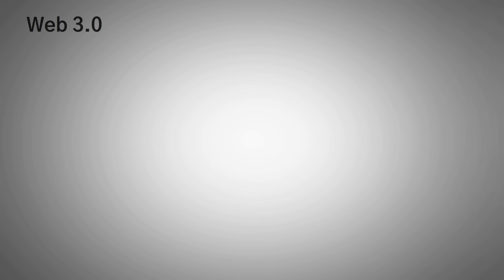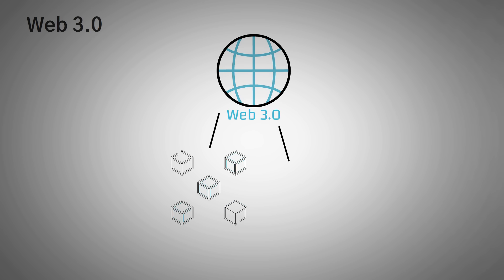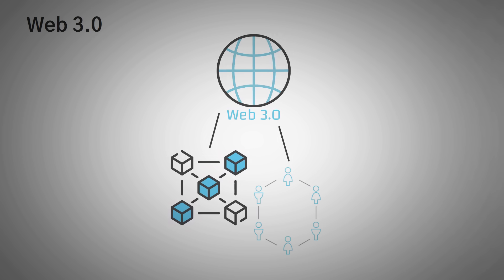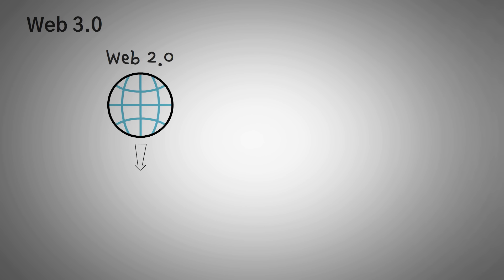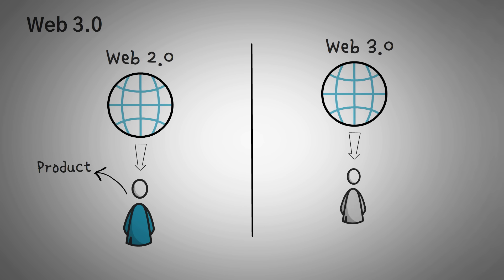Next up is Web 3.0, and this is what you came to learn about. Web 3.0 is the next evolution of the internet, probably utilizing blockchain technology and the tools of decentralization. In Web 2.0, you were the product as you were browsing social networks. But in Web 3.0, some believe that you will be the owner of your content — the stuff that you post online.